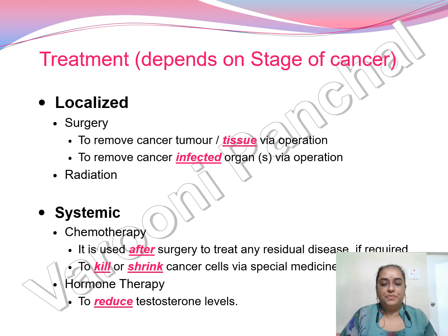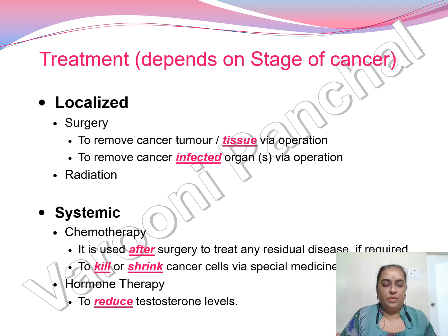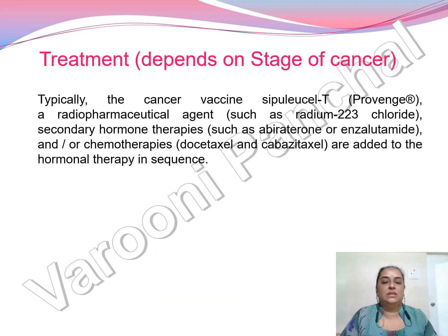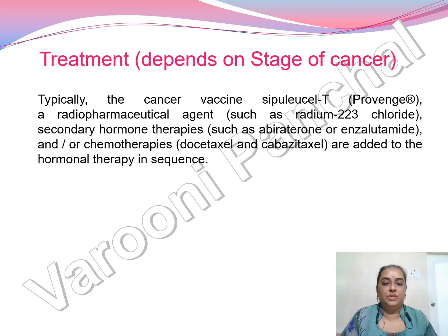Hormone therapy is used to reduce testosterone levels. In females, contraceptive pills help maintain hormone levels; similarly in males, certain hormonal therapies provide medicines to reduce testosterone. Additionally, cancer vaccines, radio-pharmaceutical agents such as Radium-223 chloride, and secondary hormone therapies are added to hormone therapy in sequence.